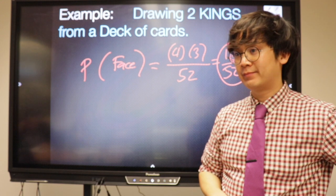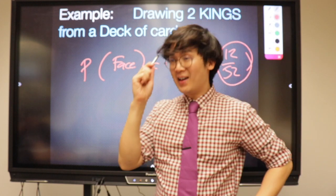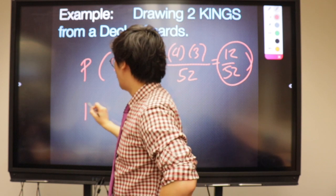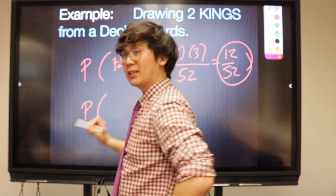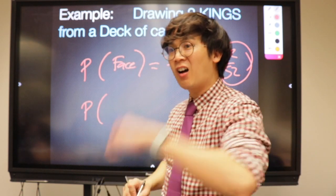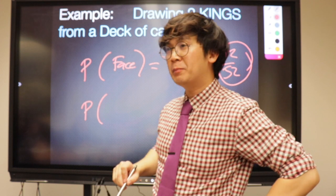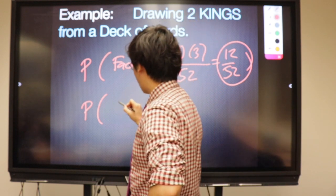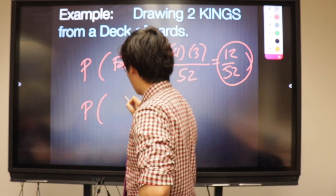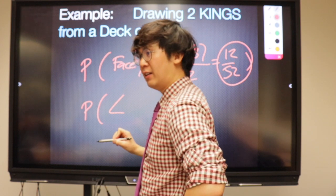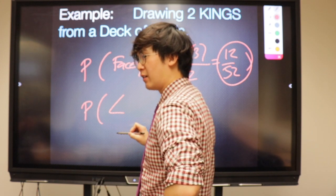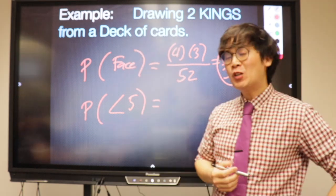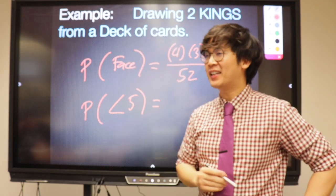So the probability of getting a face card is 12 out of 52. Now let's have another one: what's the probability that when you pick a card, the card will be a number less than five?